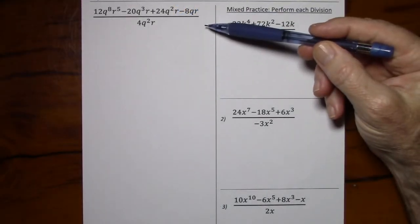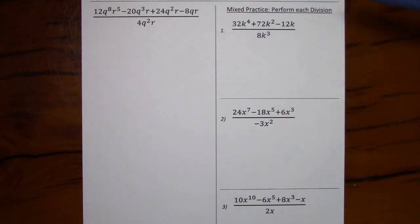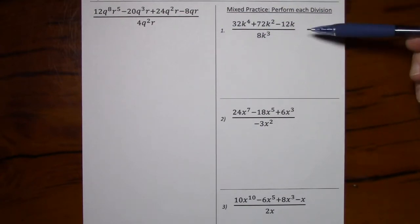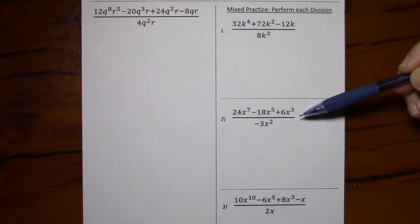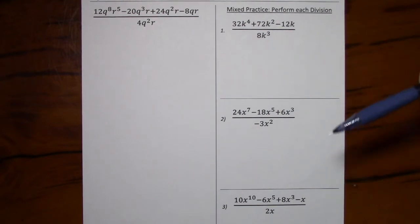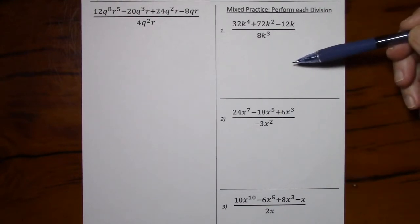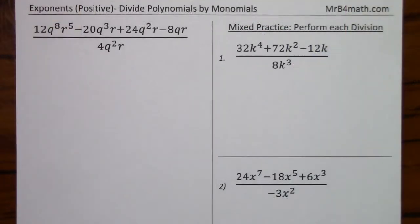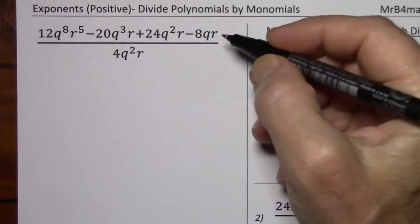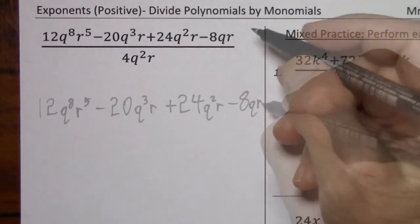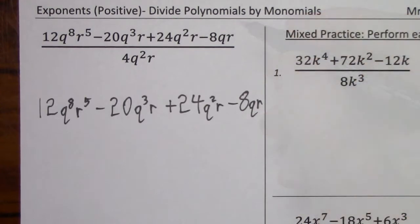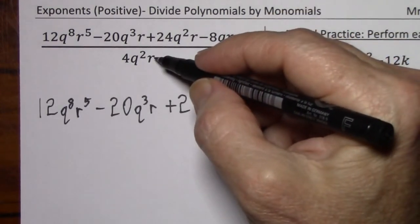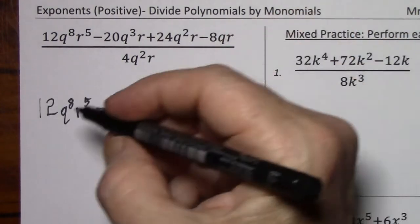I'll go over an example that's a little more complicated. Then you might want to pause the video and try each of these three problems on your own, and then check your answers against mine. First I'll rewrite the numerator and put 4q squared r in each denominator.